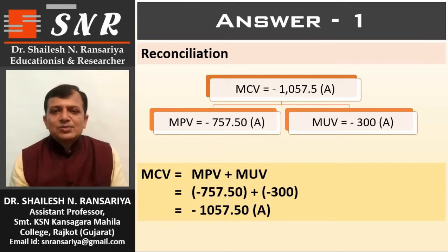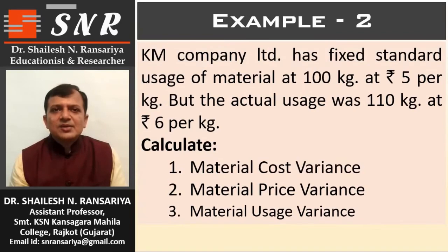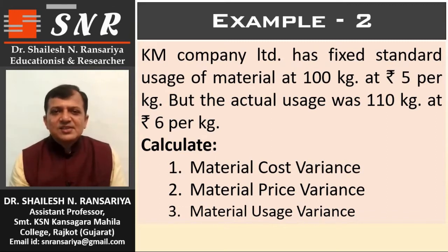Now, example number 2. KM Company Limited has fixed standard usage of material at 100 kg at the price of Rs. 5 per kg. But the actual usage was 110 kg at Rs. 6 per kg. Calculate material cost variance, material price variance, and material usage variance. Again, we will calculate the same 3 variances in this example.